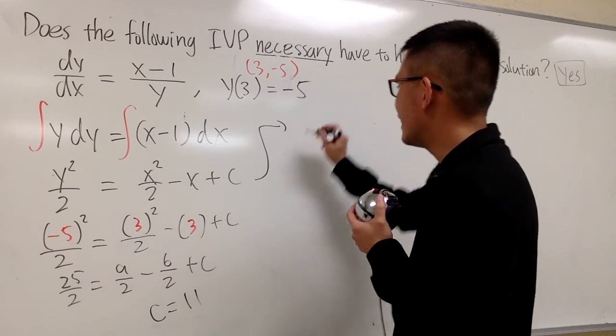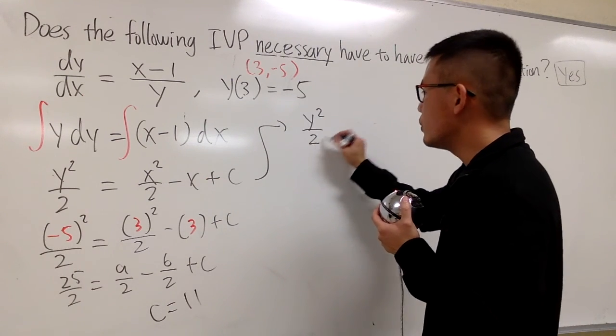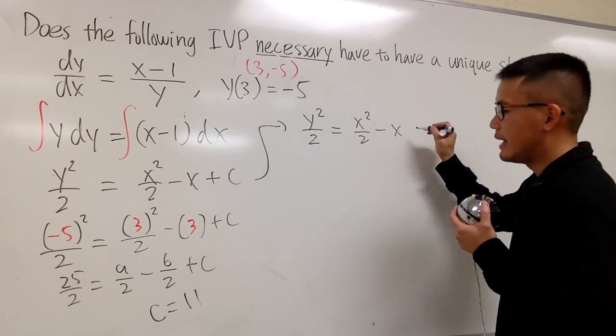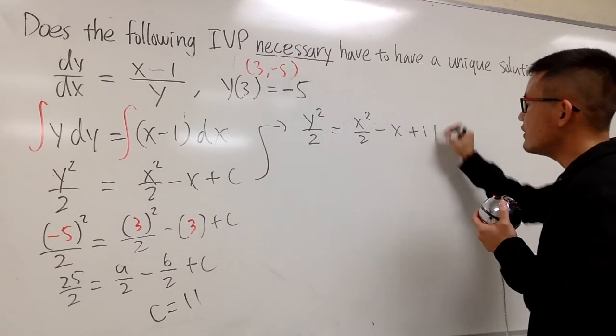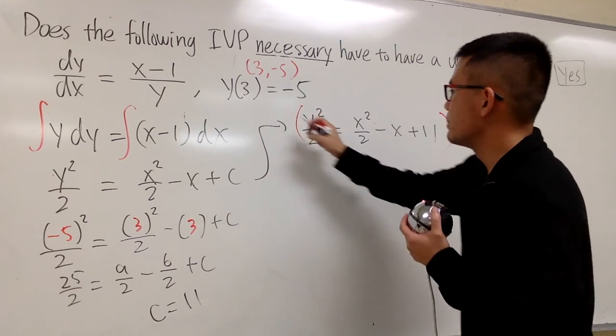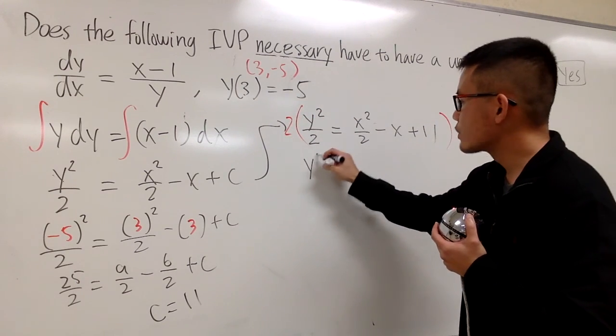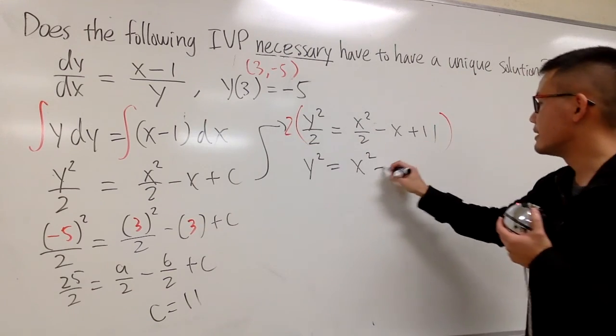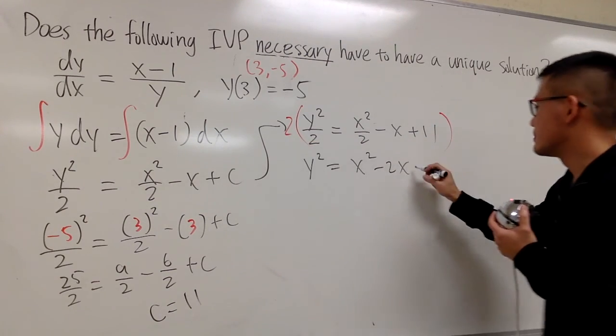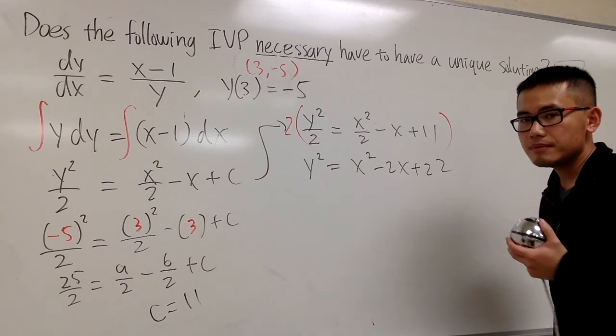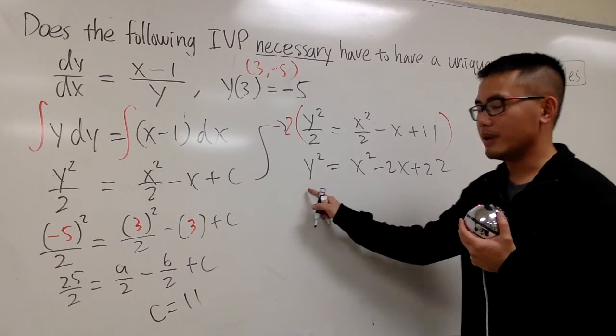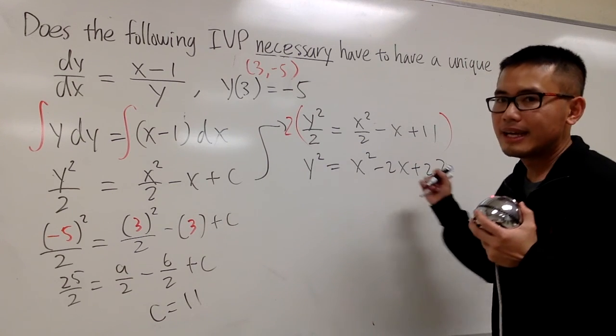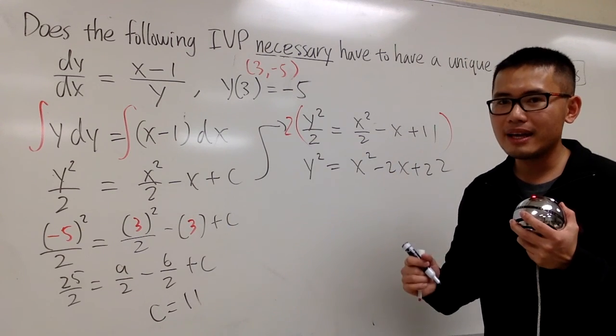And here we will have y²/2 = x²/2 - x, and c is 11, so I'll just put plus 11. And usual deal, we multiply everything by 2. So, you see this is y² = x² - 2x + 22. What's next? Well, this is what I was saying earlier. y² is equal to this. I need to isolate the y.